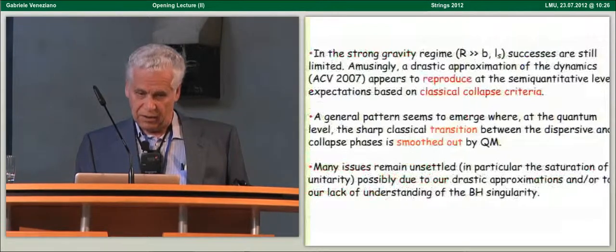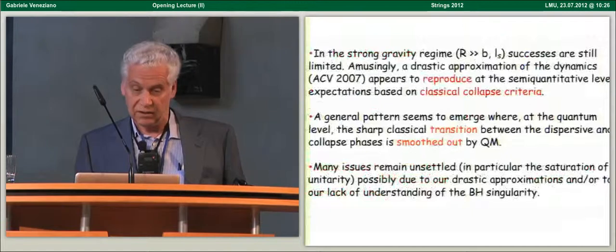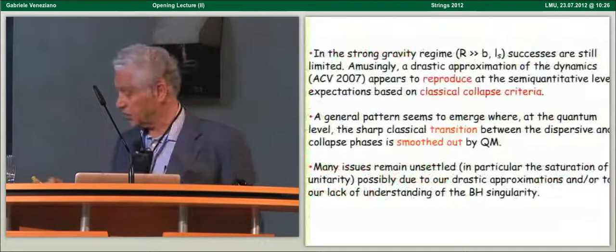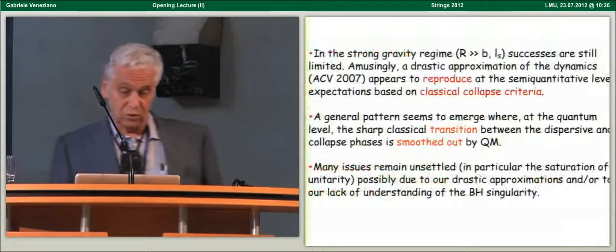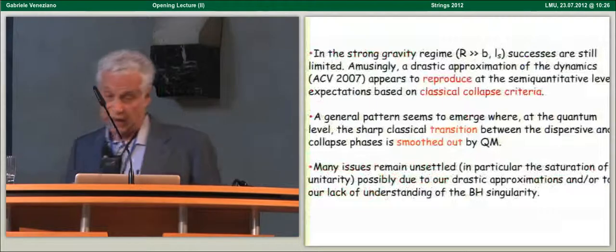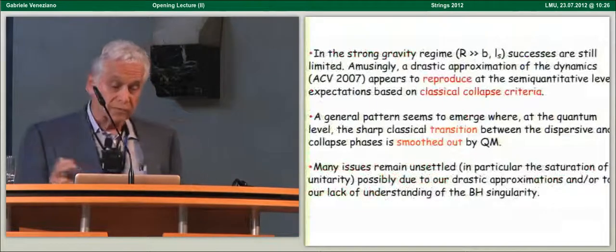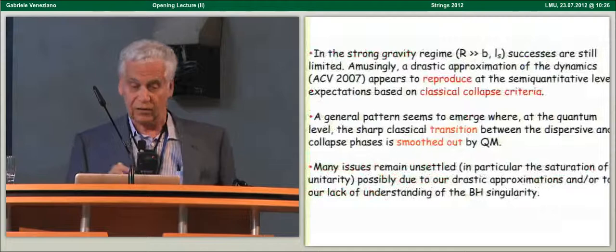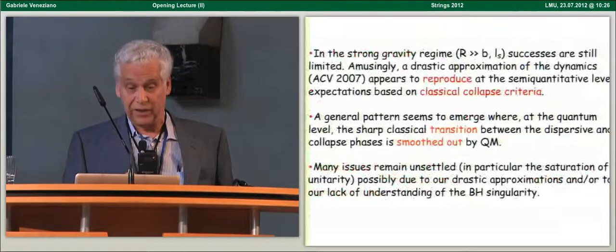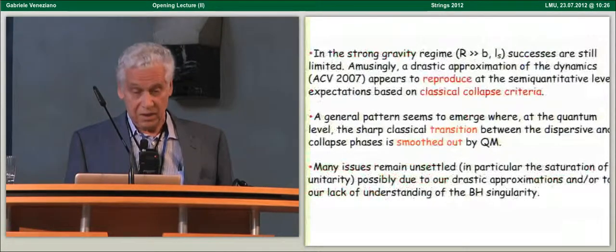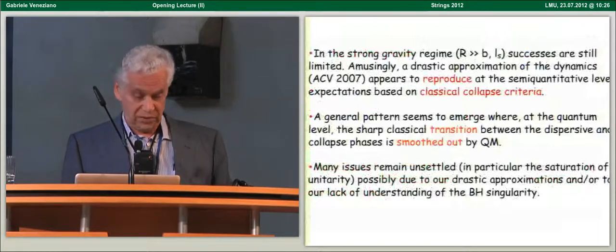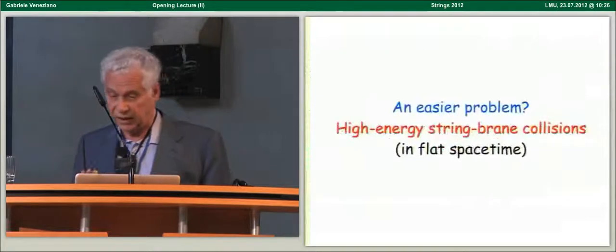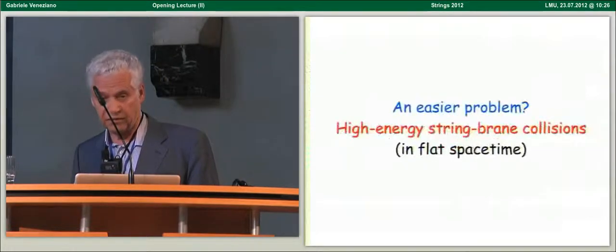And a general pattern seems to emerge where the sharp transition between dispersive and collapse phases is smoothed out by quantum mechanics. Now, there are many issues that remain unsettled. For instance, the saturation of unitarity in this regime is far from obvious, and this could be due either to our drastic approximations or, and or, to our lack of understanding of the black hole singularity.